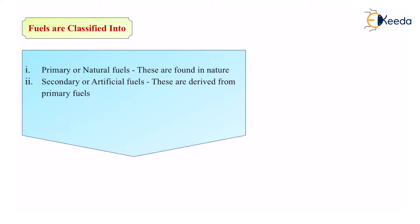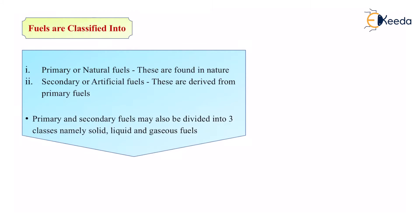Secondary or artificial fuels are derived from primary fuels. All the artificial fuels we use nowadays are man-made fuels, and these fuels are derived from or made up from different fuels which are primary in nature. That means taking primary fuels, modifying them, making them better, and then selling them as secondary or artificial fuels.